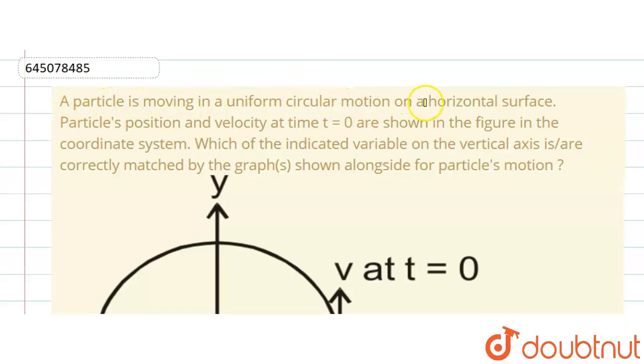moving in a uniform circular motion on a horizontal surface. Particle position and velocity at time equal to zero are shown in figure. In the coordinate system, which of the indicated variables on the vertical axis are correctly matched